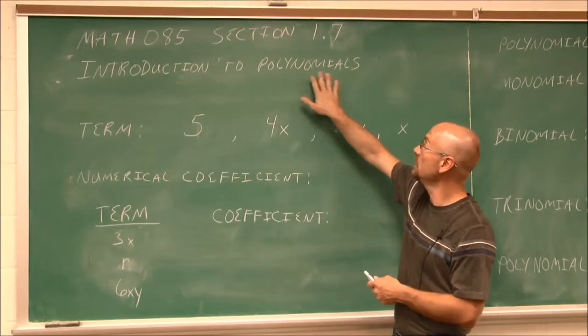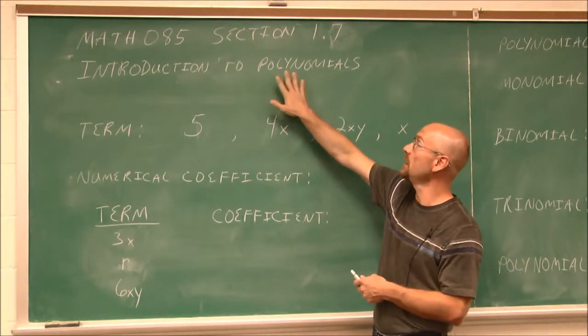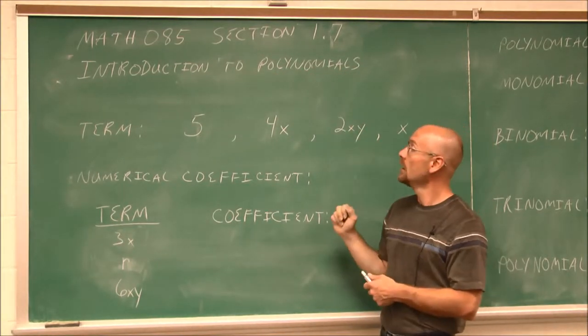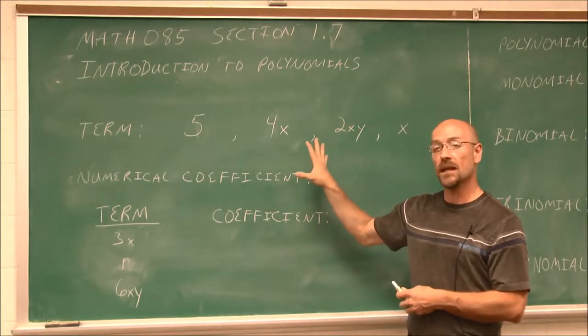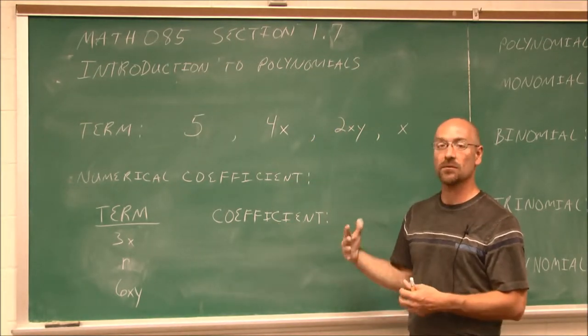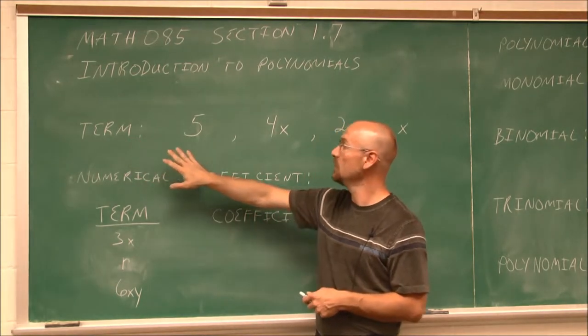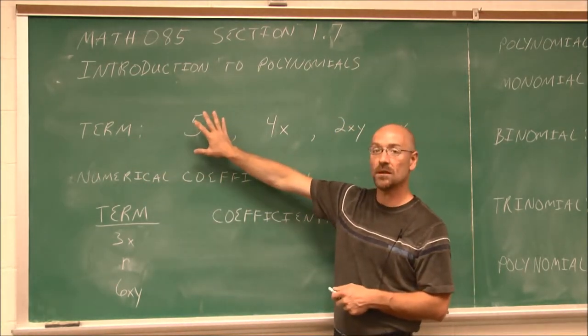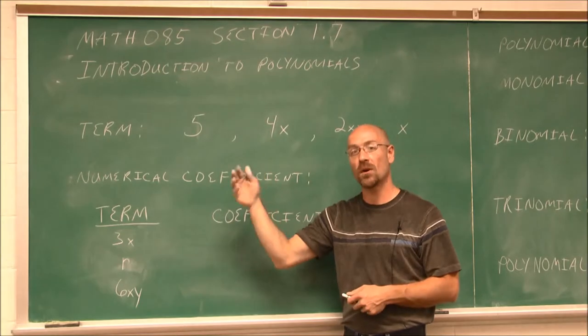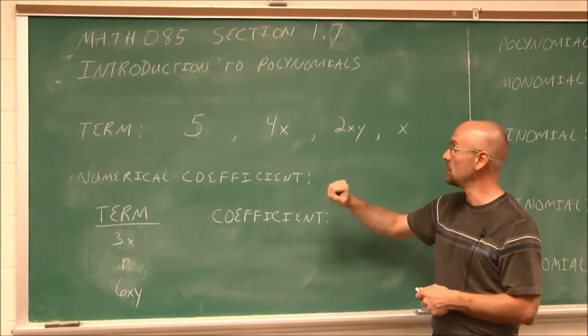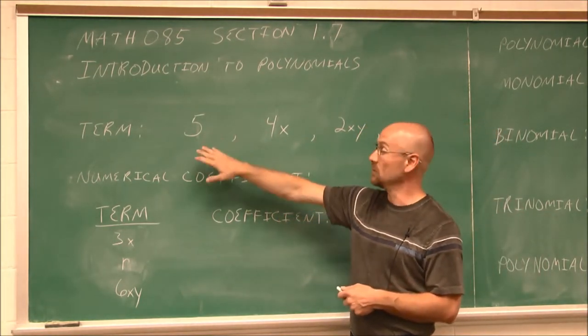And the term is polynomials, which just means many numbers. Before we begin that, we have to look at some definitions. And the first thing we're going to define is term. A term is a number or the product of a number and a variable, or several variables.